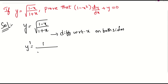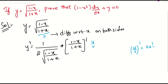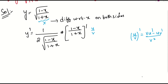This will be y dash equals 1 by 2 root of (1 minus x) by (1 plus x) — I have taken what is inside the root as capital x — and the derivative of what is inside the root. I need to apply the derivative for (1 minus x) by (1 plus x), so I will be applying the u by v formula, which is v into u dash minus u into v dash, all divided by v squared.